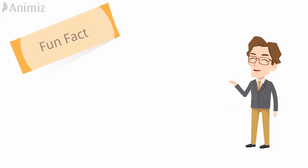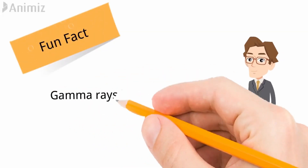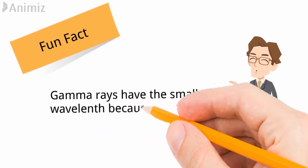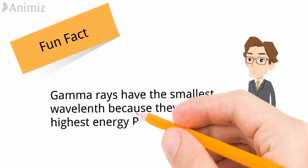Now, the electromagnetic radiation consists of an enormous number of wavelengths and frequencies. There is a fun fact here, students: the gamma rays have the smallest wavelength because they are the highest energy photons. And the radio waves, on the other hand, have the largest wavelength. From the point of view of physics, all these different waves are the same — they all have wave-particle duality and they all travel with the speed of light.